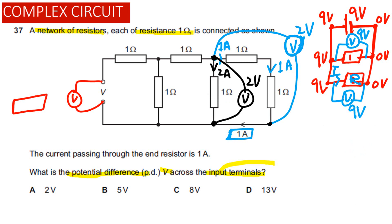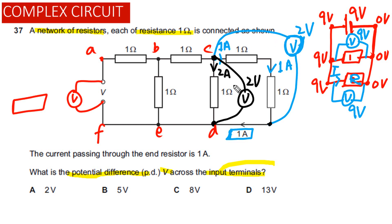Now let's label the points in the circuit. This is point A, this is point B, this is point C, this point is D, this is E, and this point is F. The voltage across CD we have found is equal to 2 volts.